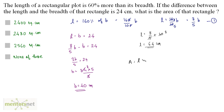Area is equal to length into breadth, and that's 64 times 40, which is equal to 2560 cm². So the answer is option C.